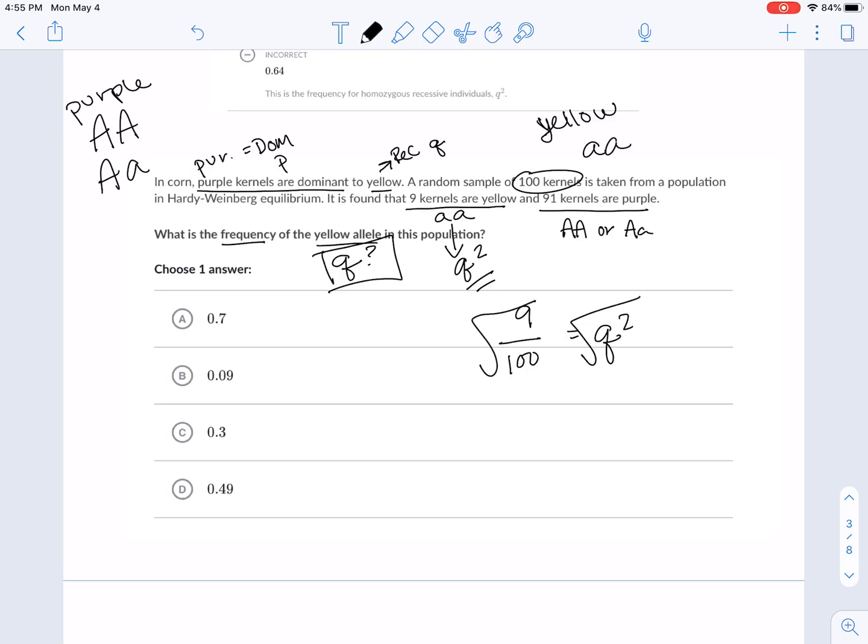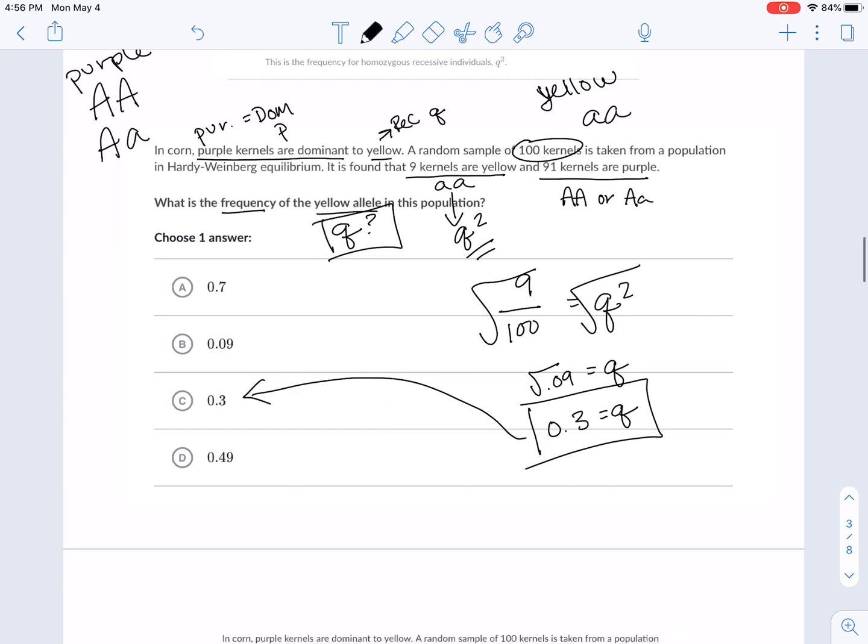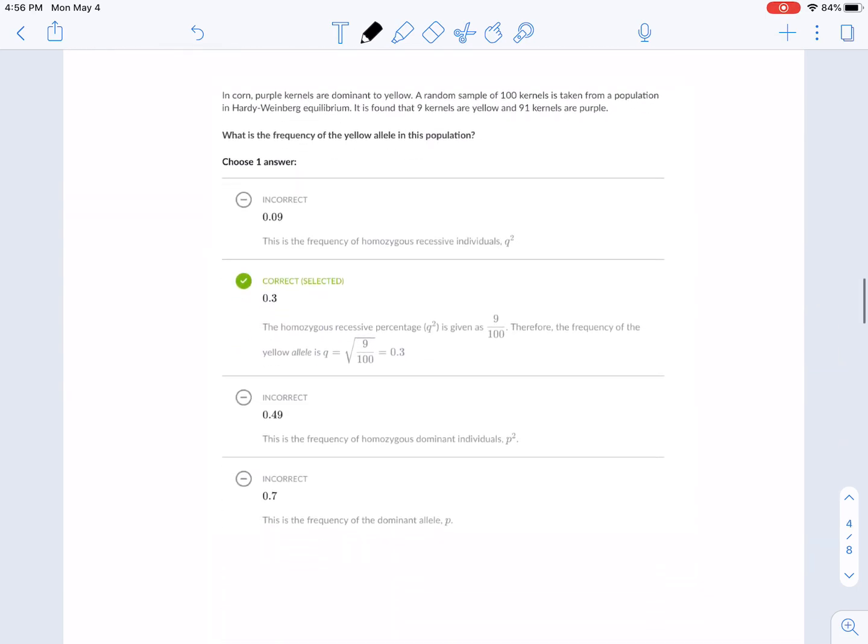So if nine out of 100 is equal to Q squared, what do you have to do? Square root, right? So you're going to have the square root of 0.09 is going to give you Q. Well, that just so happens to be 0.3. Again, calculators are a thing. It's asking us for the frequency of the yellow allele. It should be pretty low compared to the other one because you have 91 that are purple. So that's going to be what you put here.